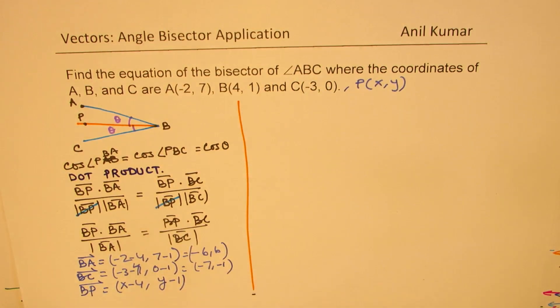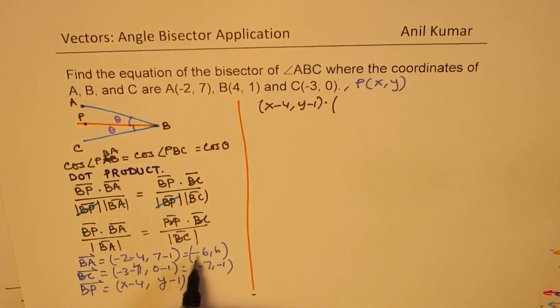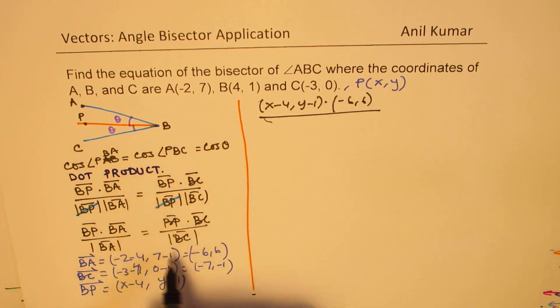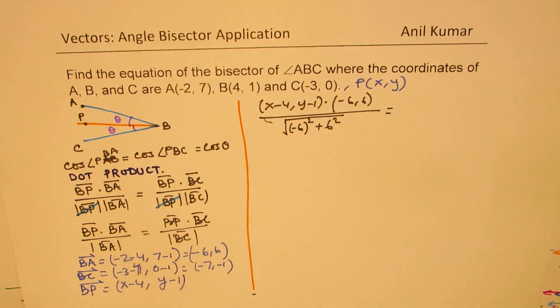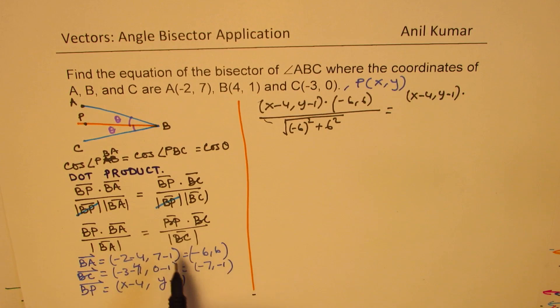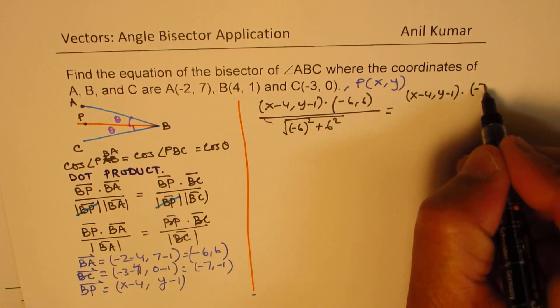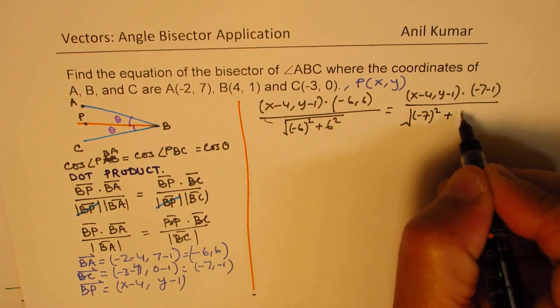Using this particular equation, we should be in a position to find the equation of the bisector of the angle. So, BP dot BA, that means we have (x - 4, y - 1) dot (-6, 6) over magnitude of BA, which is square root of (-6)² + 6², should be equal to BP dot BC, which is (x - 4, y - 1) dot (-7, -1) over square root of (-7)² + (-1)².